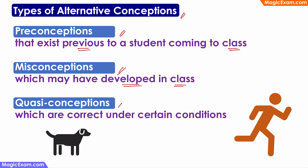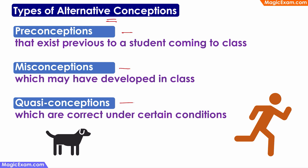Then there can be quasi-conceptions — alternative conceptions which are correct under certain conditions only. For example, if my parents tell me black dogs are dangerous, that is an alternative conception. If one day a black dog actually chases me, I might believe all black dogs are dangerous just because it was correct under one condition. In simple words, alternative conceptions, preconceptions, misconceptions, and quasi-conceptions are nothing but mis-explanations or misunderstandings.